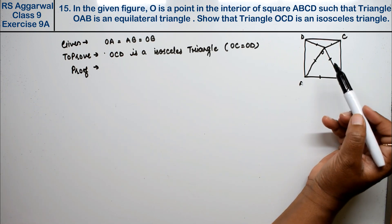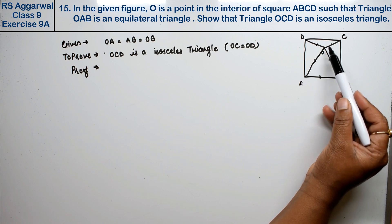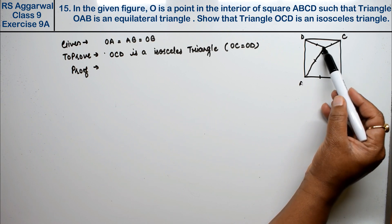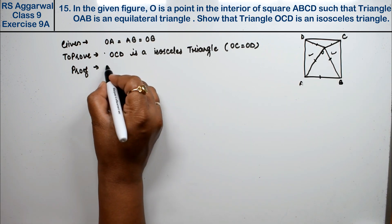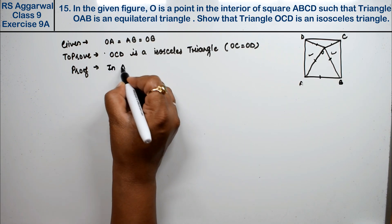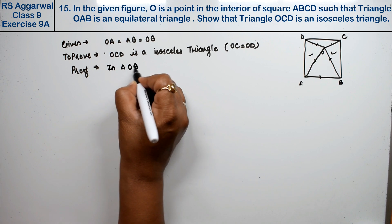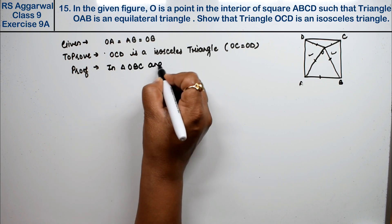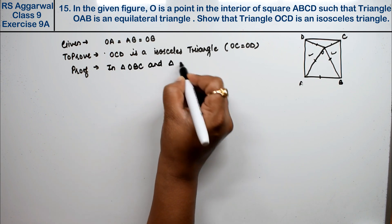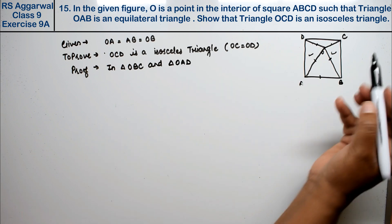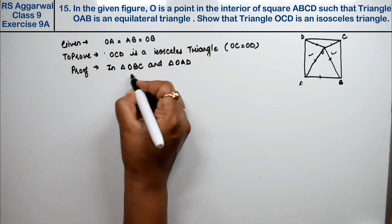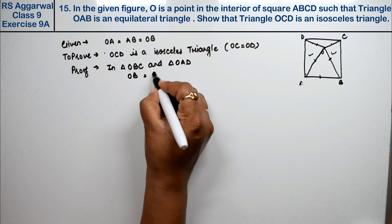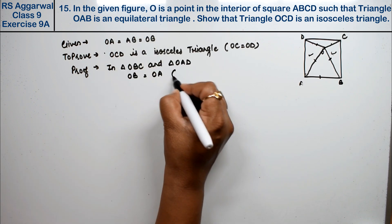We'll consider two triangles: triangle OBC and triangle OAD. In these triangles, we have OB equals OA, which is given from the equilateral triangle.